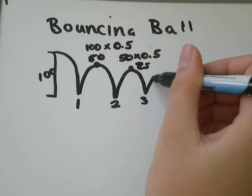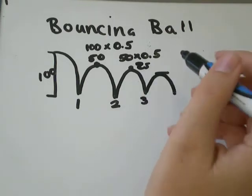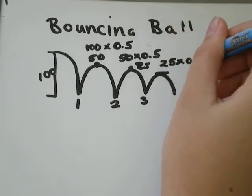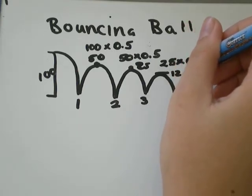And then our ball will bounce a third time. Up here, it's got 50% of its previous height of 25. So that would be 25 cm times 0.5, which would be 12.5 cm.